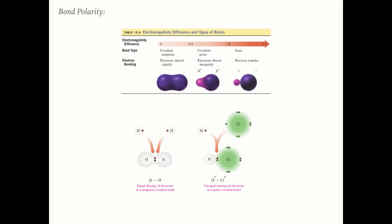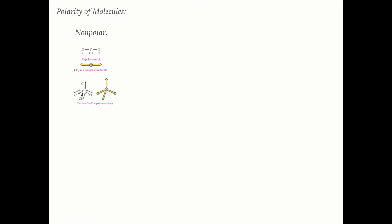Bond polarity lets us determine if a whole molecule is polar. For nonpolar molecules, the dipoles cancel — like a tug of war where nothing moves. In CO2, oxygen is more electronegative than carbon so dipoles point outward, but they cancel. Similarly in CCl4, chlorine pulls in four directions equally. Since the dipoles cancel, both molecules are nonpolar.